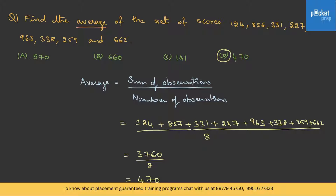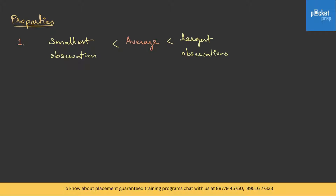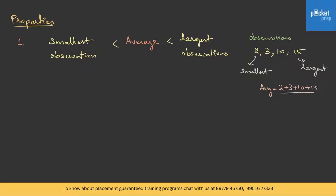Now let's understand a few properties of averages. Property 1: the average is always greater than the smallest observation and less than the largest. For example, with observations 2, 3, 10, and 15, the smallest is 2 and the largest is 15. The average is (2+3+10+15)/4 = 7.5, which is clearly greater than 2 and less than 15.